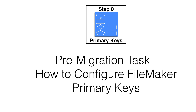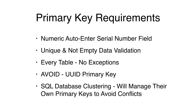There are multiple conversions done by FMPro Migrator for which a primary key is required for every converted FileMaker database table, even including join tables. FMPro Migrator expects a primary key to be a numeric auto-enter serial number field having unique and not empty data validation. Using a UUID for the primary key is not recommended. You can potentially configure another column as a UUID column in a SQL database, just don't make it the primary key.